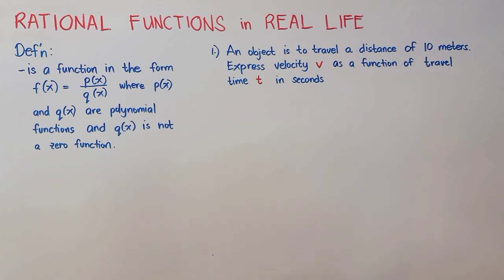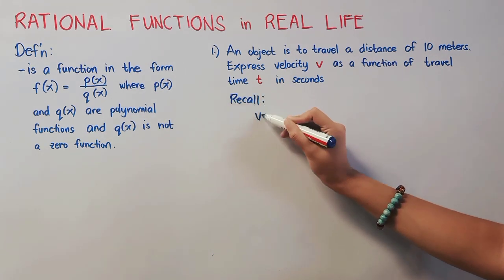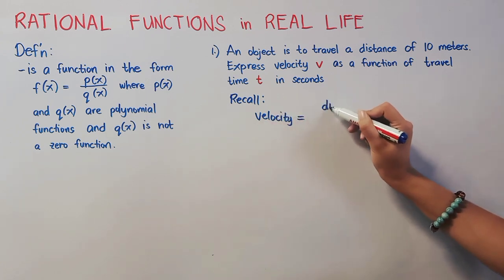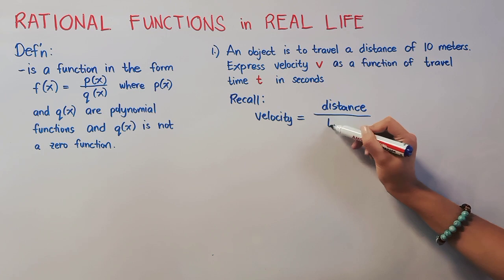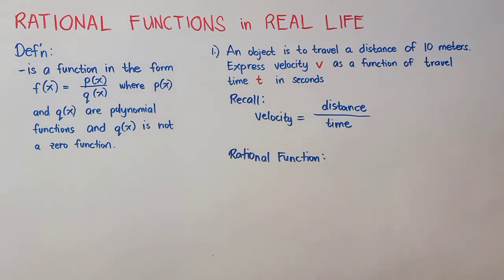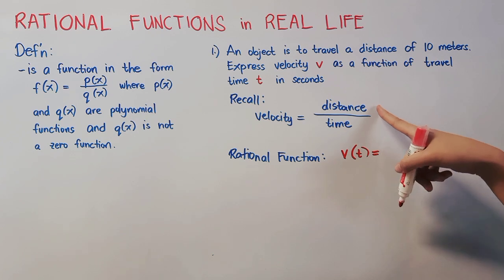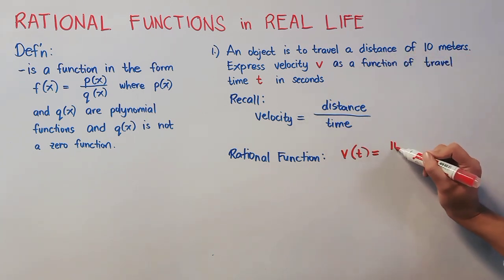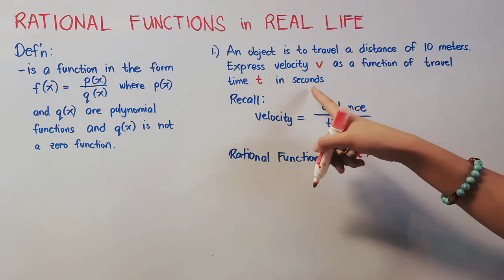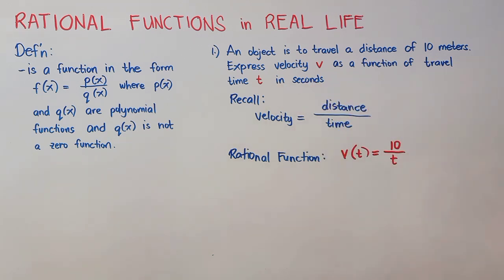Let us start with number 1. An object is to travel a distance of 10 meters. Express velocity v as a function of travel time t in seconds. Recall that velocity equals distance over time. With this, we can now get the rational function of number 1. The velocity as a function of travel time would be v(t) equals our distance is fixed at 10 meters over our time is still unknown, so we'll just place t.